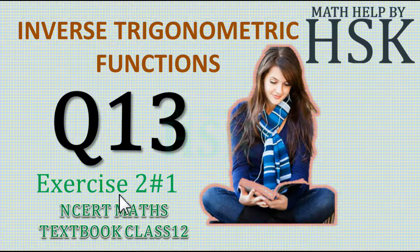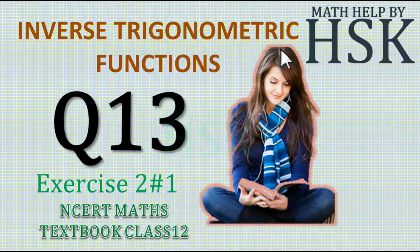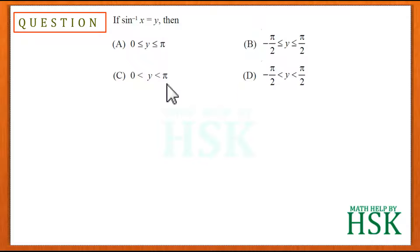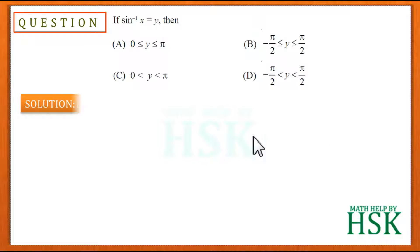Taking question number 13 of exercise 2.1 from the chapter Inverse Trigonometrical Functions of NCERT Maths textbook class 12. The question is an objective question and it says that if sin⁻¹(x) is equal to y, then which of the options is correct?